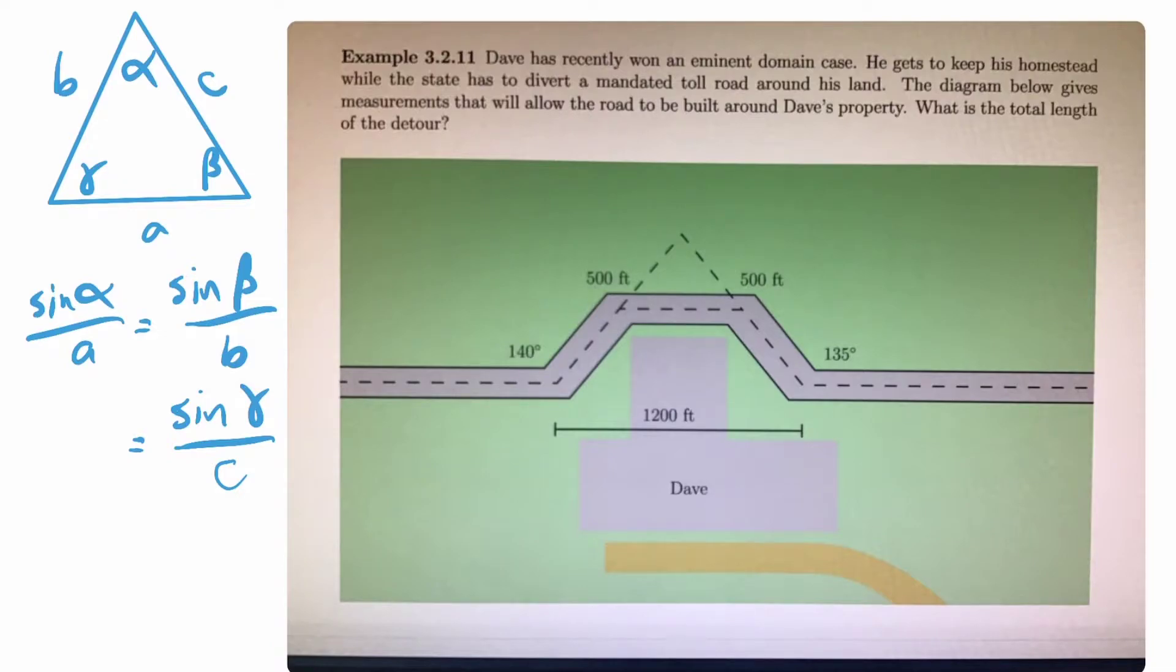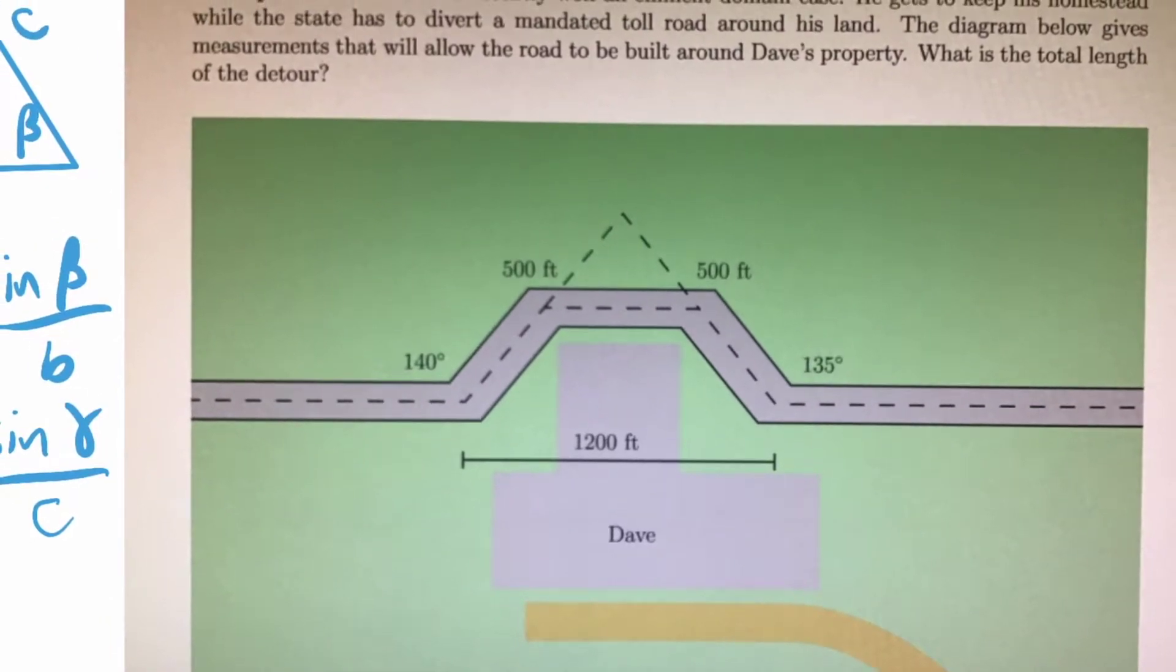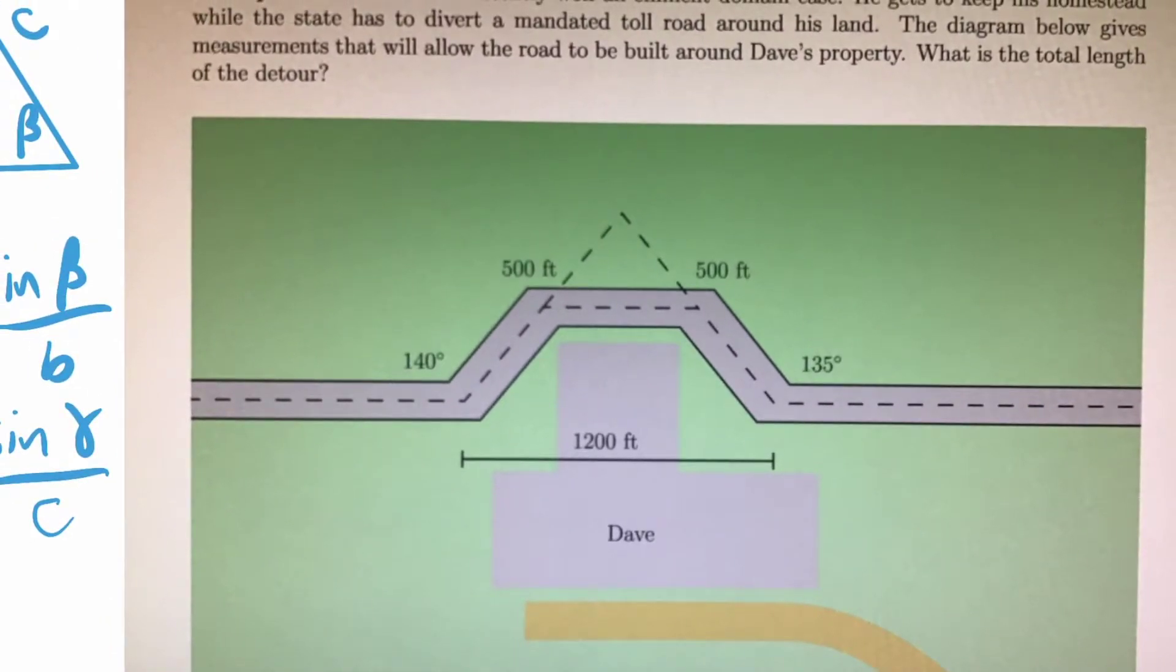Let's say that Dave has recently won an eminent domain case and he gets to keep his homestead while the state has to divert a mandated toll road around his land. Basically, a law is passed, a road has to be built, and his property is in the path of the road. So the state needs to buy his land. He doesn't want to, so they sue him, they do a legal battle, and he wins. So he gets to keep his property. But the law is still a law. They still have to build the road, so they now have to build it around his property. I've been having some issues with the iPad. I'm not going to zoom in too much because it's been causing me problems.